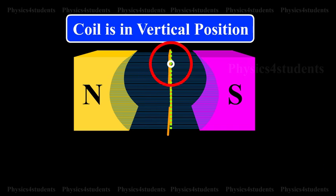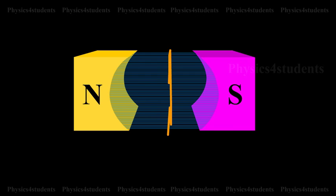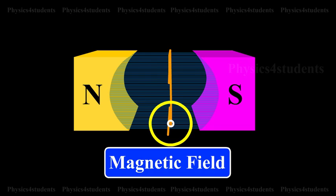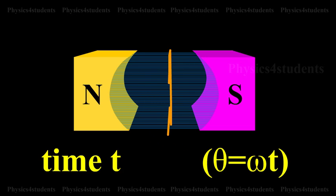Suppose initially the coil is in vertical position so that the angle between the normal to the plane of the coil and the magnetic field is zero. After a time t, let theta equal omega t be the angle through which the coil is rotated.